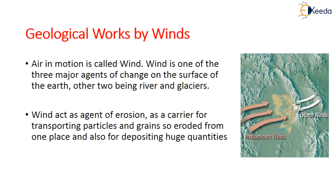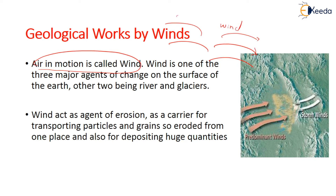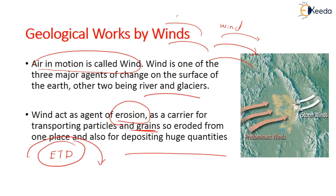Coming to the geological works by wind — air in motion is called wind. Wind is one of the three major agents of change on the surface of the earth; the other two are river and glacier. Wind acts as an agent of erosion, and also as a carrier for transporting eroded particles and grains from one place to another, and helps in depositing huge quantities. Erosion, transportation, and deposition is a cyclic process in which wind plays a major role.